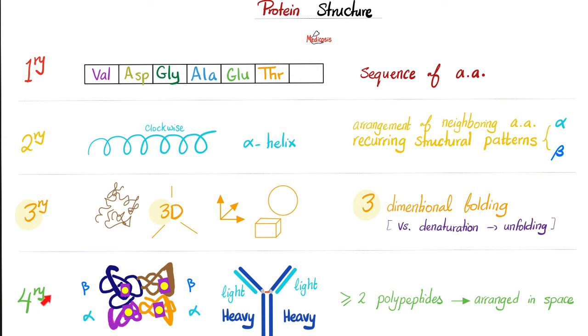Last, quaternary structure. Not every protein has a quaternary structure. If you want a quaternary structure, you've got to have at least two polypeptides. You could have two or more. You can have a hundred if you want. And these are arranged in space. Example, hemoglobin. Two alpha chains and two beta chains. Mnemonic: two plus two equals four.